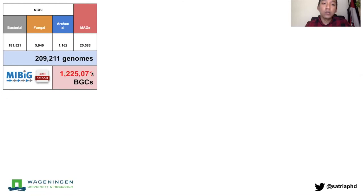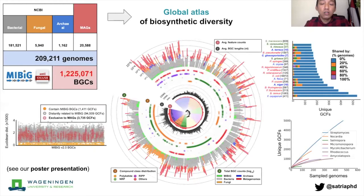We can do a global scale homology analysis to basically build a map of biosynthetic diversity or potential biosynthetic diversity across all the organisms that we have sequenced. You can see the details of the results of this project on my poster presentation.